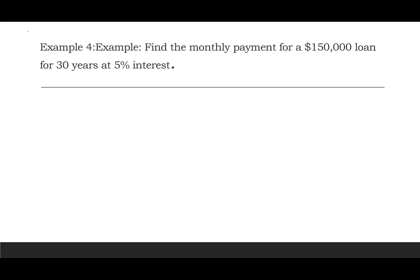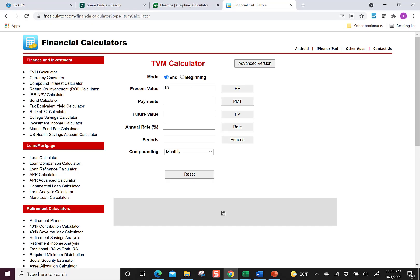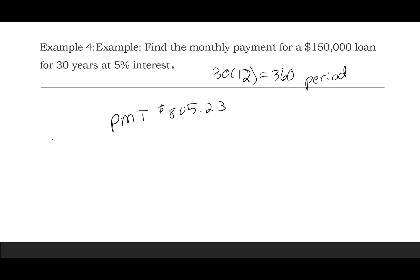Let's find the monthly payment for a $150,000 loan for 30 years at 5% interest. Note: this is the loan amount, not the house price. The total number of payments is 30 × 12 = 360. In the financial calculator: PV = $150,000, FV = 0, rate = 5%, periods = 360. The monthly payment is $805.23.